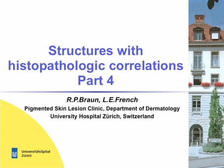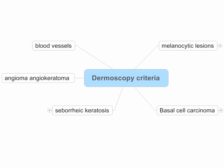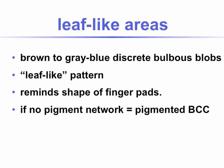Ladies and gentlemen, this is Ralph Brown from Zurich in Switzerland with part four of the educational podcast on dermoscopy called Structures with Histopathological Correlations. In this podcast, we will go on to cover the histopathological correlation of the criteria for basal cell carcinoma, seborrheic keratosis, angioma, angiokeratoma, and very briefly, the blood vessels.